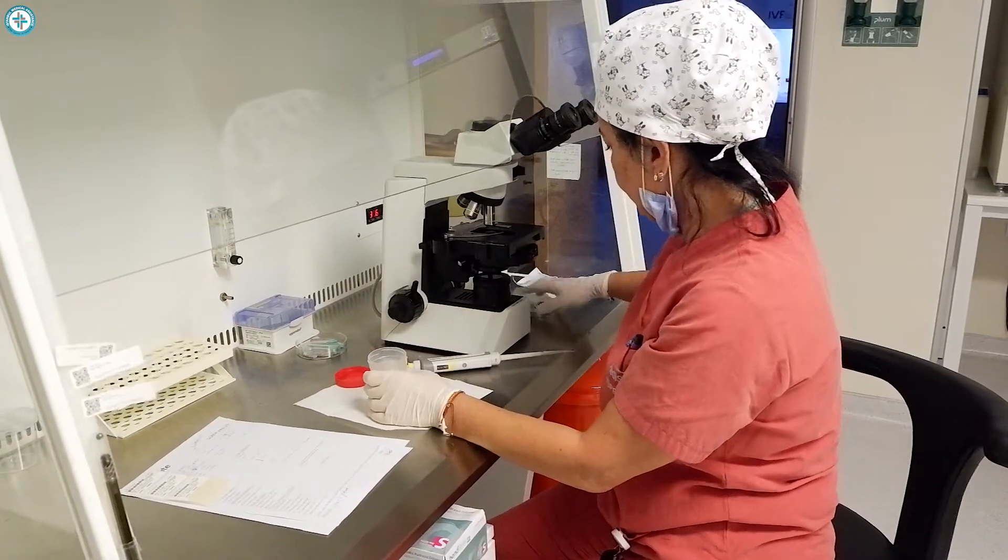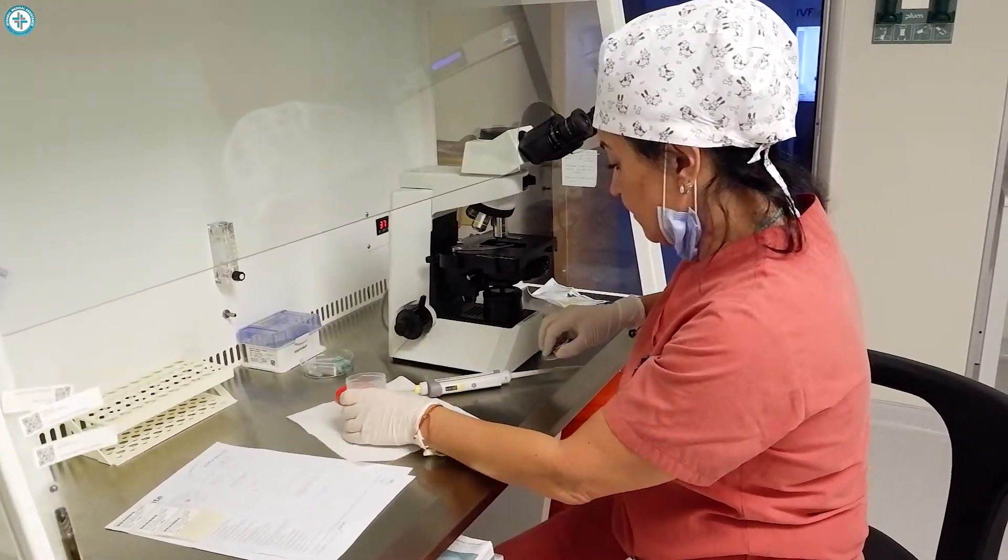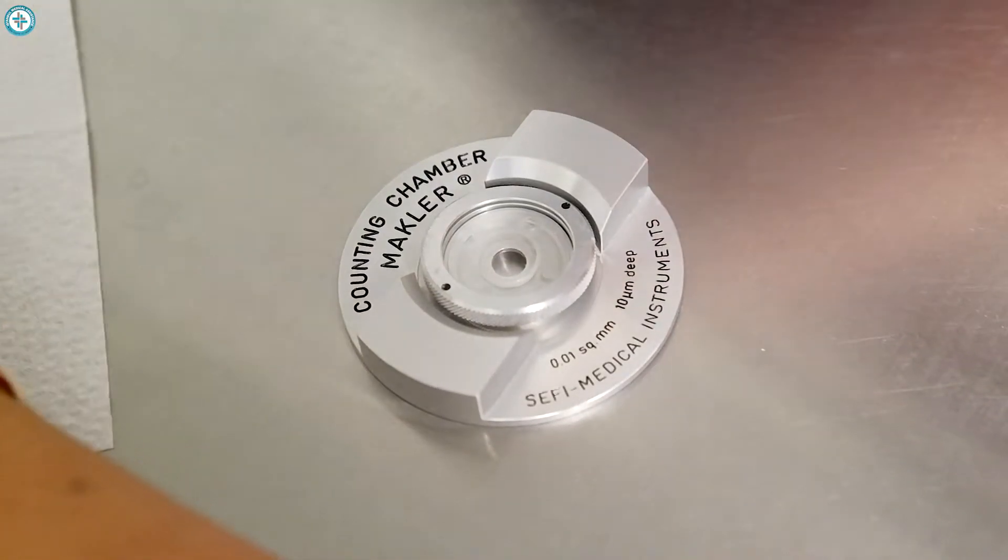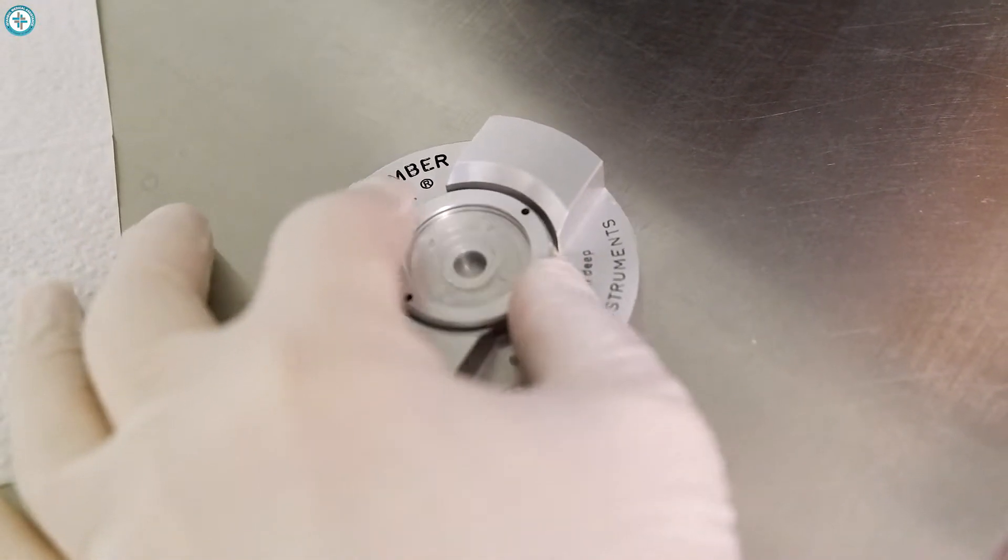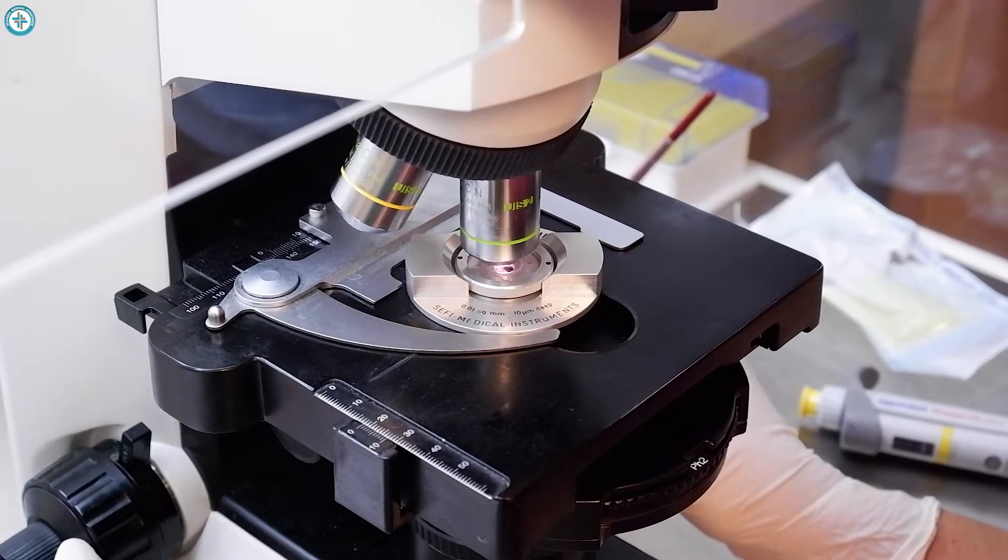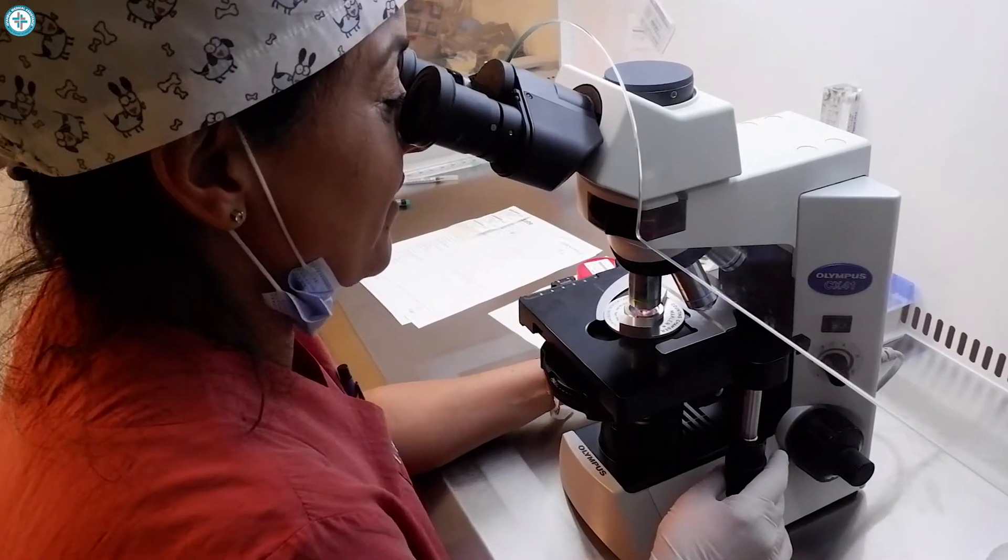For counting sperm, she puts the sperm in a macular sperm counting chamber, which is an easy to use device for the fast, accurate sperm count. She performs the analysis directly on non-diluted semen fluid by a microscope.